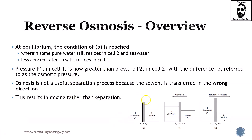At equilibrium, condition B is reached. Some pure water still resides in cell 2, and the seawater in cell 1 is now at less than 3.5% concentration. Pressure P1 in cell 1 is now greater than pressure P2 in cell 2 — the difference in height corresponds to the difference in pressure. Osmosis is not a useful separation process because the solvent is transferred in the wrong direction: we are adding pure water and ending up with less pure water.